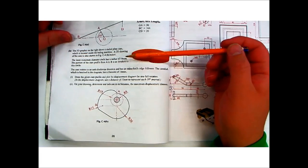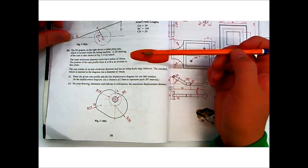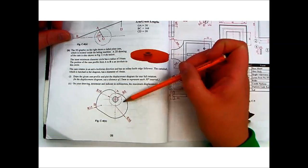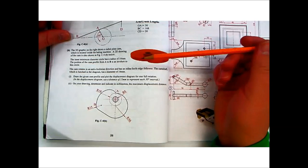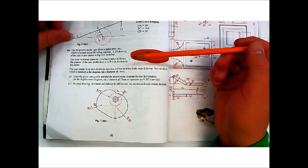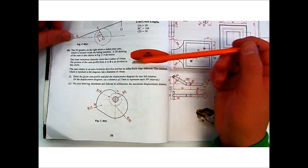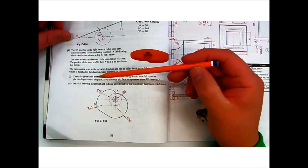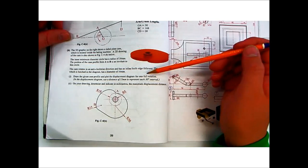CAM rotates in anti-clockwise direction and has an inline knife edge follower. The CAM shaft, which is hatched in the diagram, has a diameter of 16mm, so that's your radius 8. Part 1, draw the given CAM profile and plot the displacement diagram of full rotation. The placement diagram uses distance 15mm clips in each 30 degree interval, and also on your drawing, determine and indicate the millimeter of the maximum displacement distance.